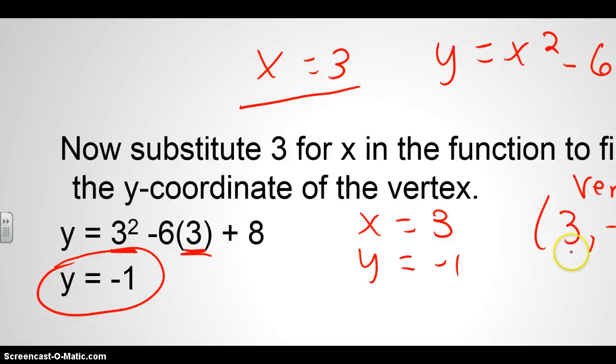And remember, 3 represents x, and in the form that represents your h. Negative 1 represents y, and that represents your k in the vertex form. So, your final answer in the vertex form is going to be y equals parenthesis x minus 3 squared minus 1. So, that's how we find the vertex of a parabola, and then that's how we put this into the vertex form.